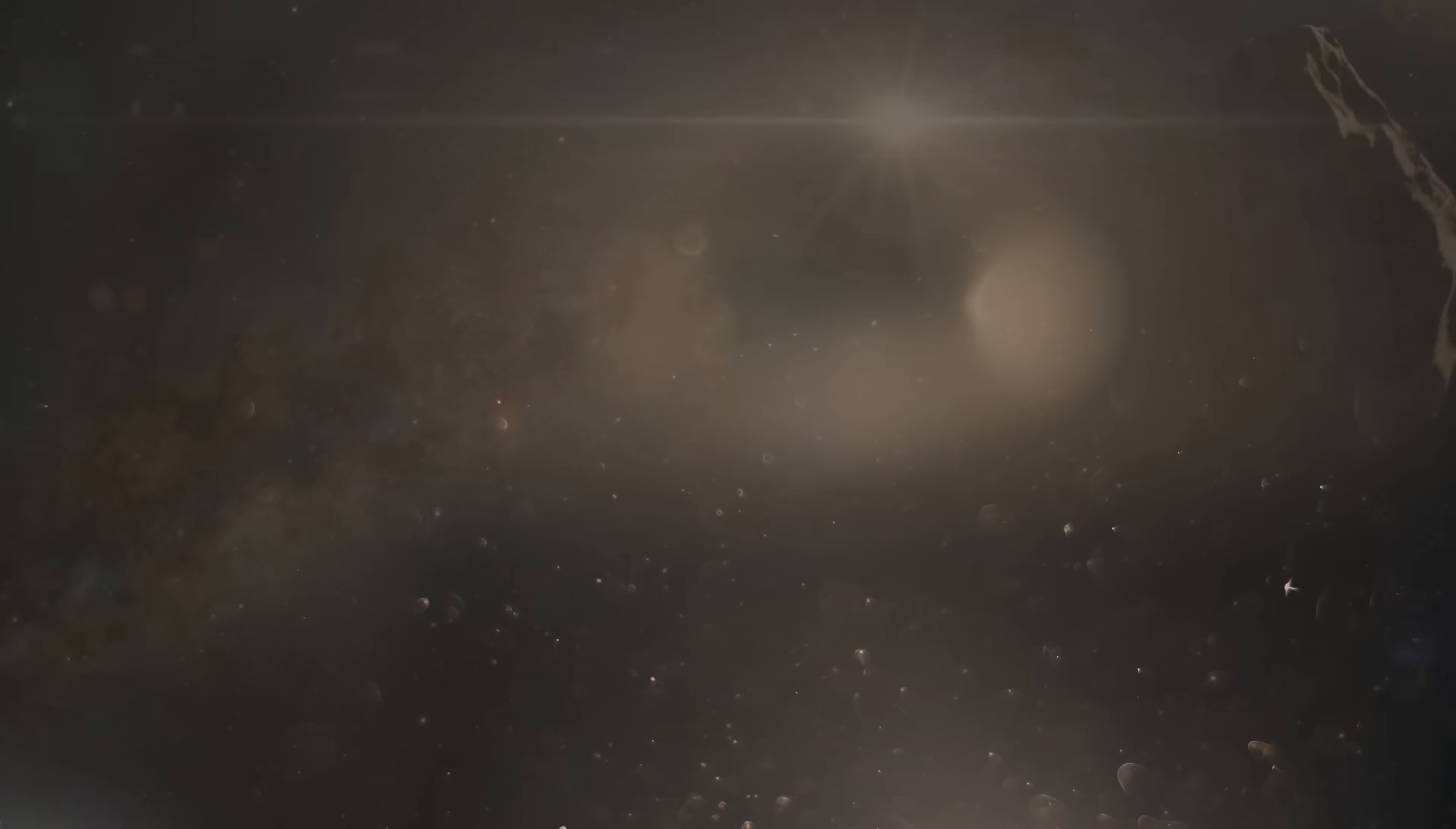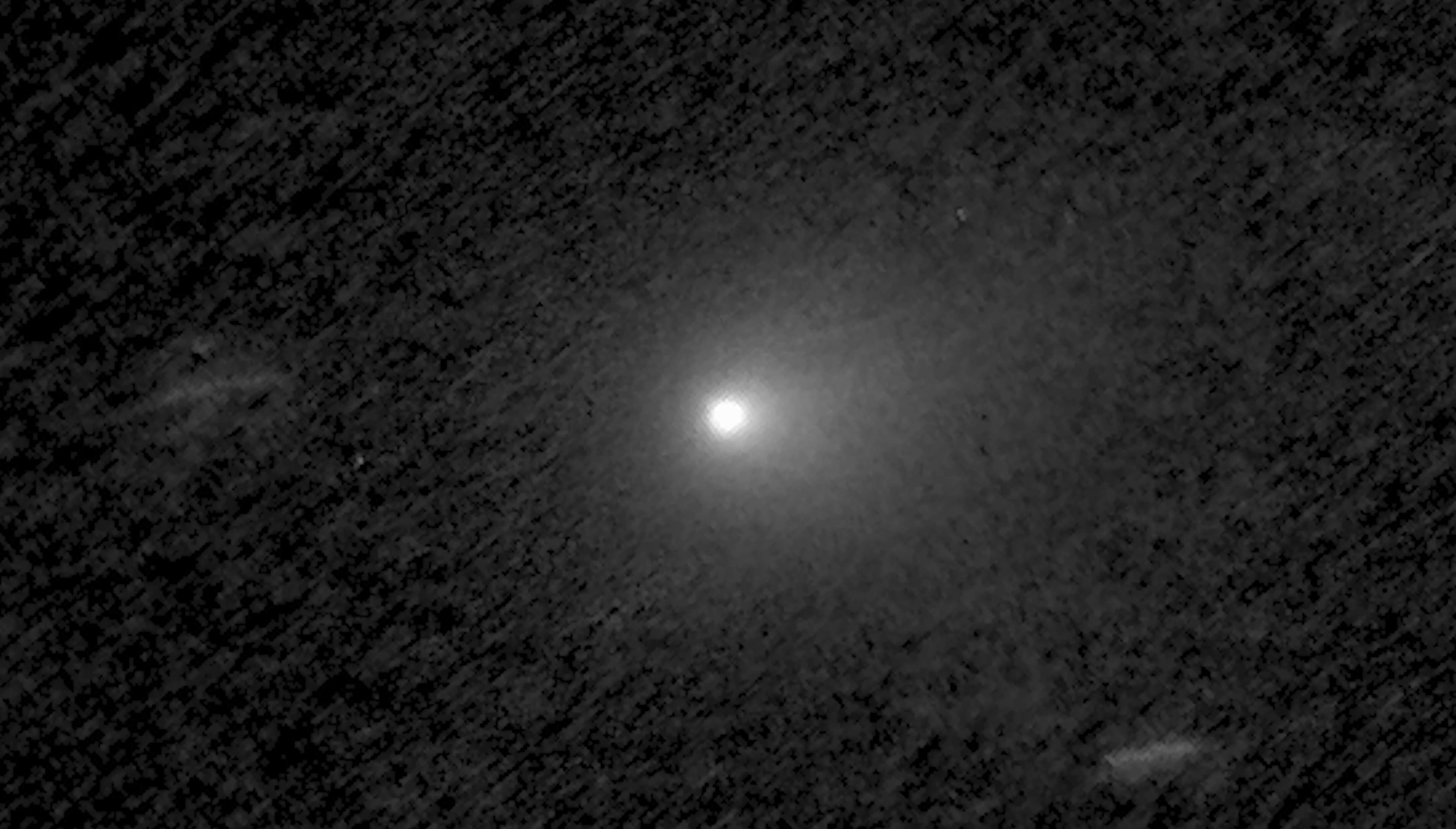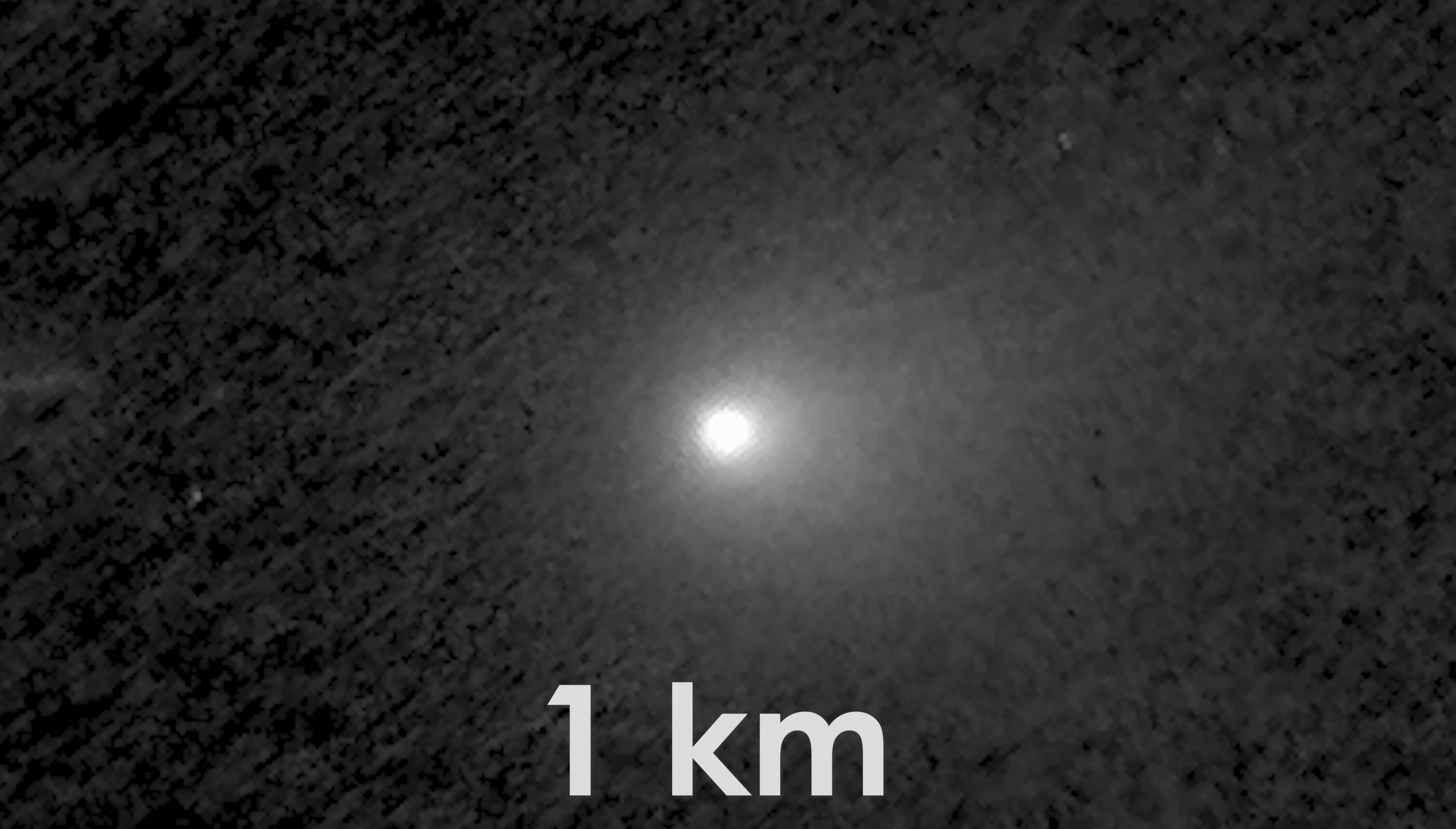As it approaches the sun, higher temperatures may reveal more details about its true nature. Scientists are still trying to determine whether it might be an extraterrestrial object, and if so, whether it was launched from somewhere else or came from another planet. The nucleus of 3I Atlas is estimated to be between 0.32 and 5.6 kilometers in diameter, with the most likely size being under 1 kilometer.